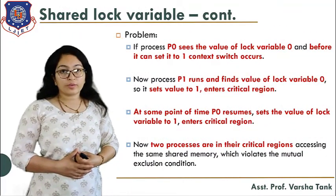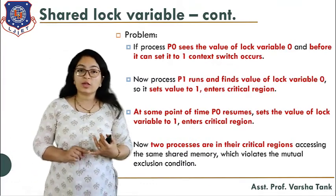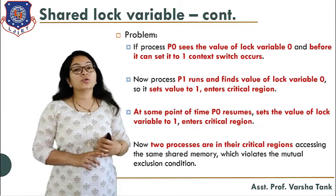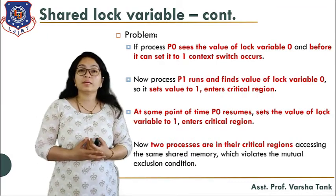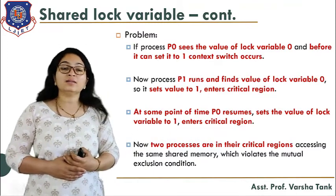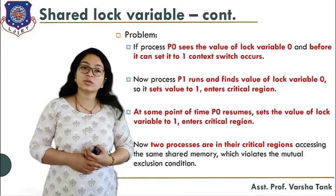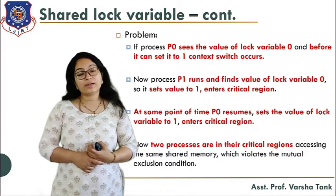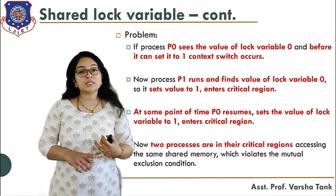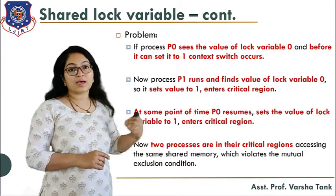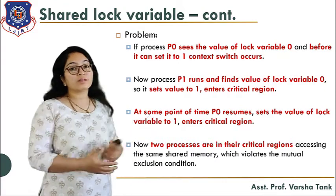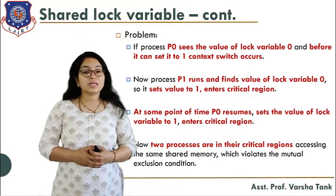The problem with shared lock variable: if process P0 sees lock is zero and before it can set it to one a context switch occurs, process P1 runs, also finds lock zero, sets it to one and enters the critical region. When P0 resumes, it also sets lock to one and enters the critical section. Now two processes are simultaneously in the critical section, which violates the mutual exclusion condition.